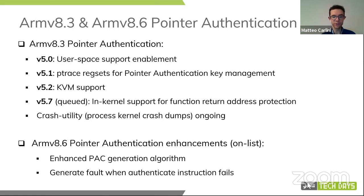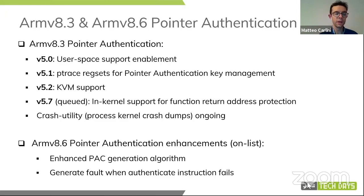This is upon any regression or any fix that we might encounter during the merge window, which will open pretty soon as soon as 5.6 is tagged and released. We are still working on a crash utility for crash-dump analysis, which is ongoing. The 8.6 architecture also foresees some improvements and enhancements on pointer authentication, which are currently in discussion on lists — mainly two topics: some enhanced pointer generation algorithm, and some faults that get generated when the authentication instruction fails.